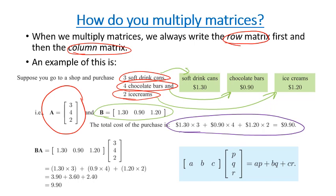We can do the exact same thing using matrices. And the example is B times A, where we've got our row matrix first, which happens to be the price matrix, and we've got our column matrix second, which are the items. So we've got $1.30 times by 3, $0.90 times by 4, and $1.20 times by 2.